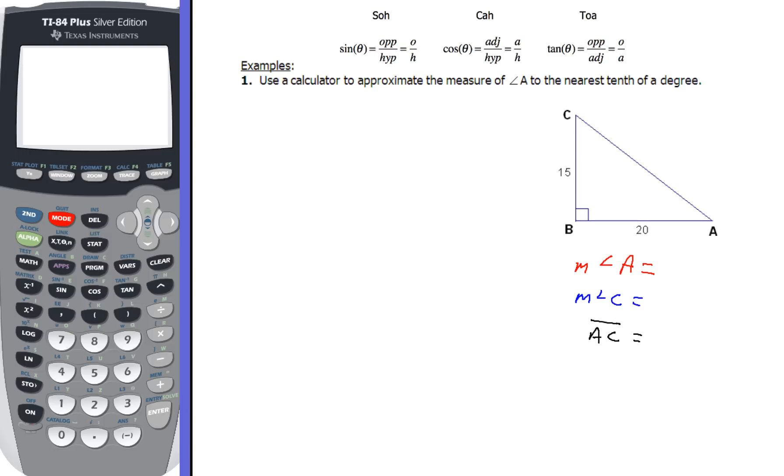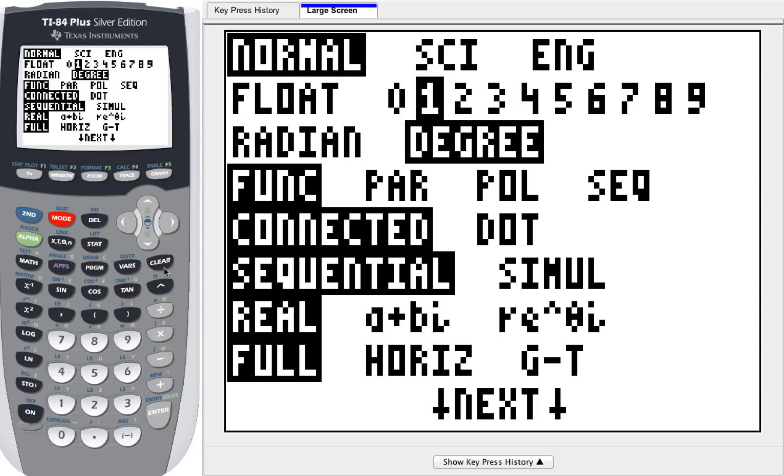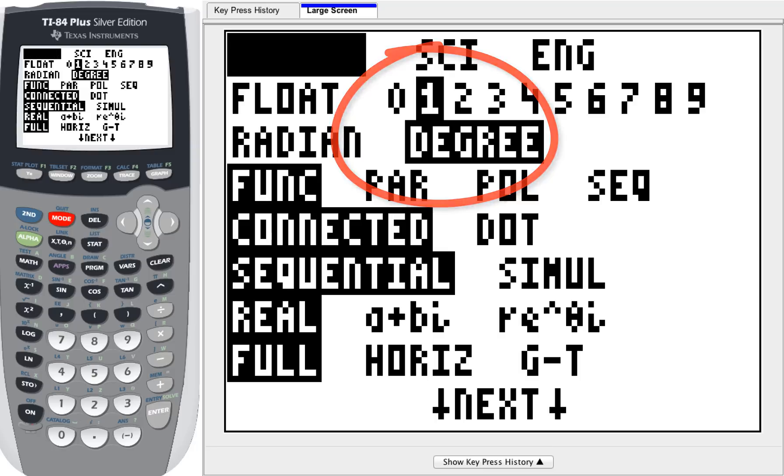Now to work with our calculator, we want to make sure our calculator is set up in the right mode, and all of these problems in this section, they're all going to be going to the tenths place. So what I want you to do is hit your mode button, and make sure that your screen and my screen match. You want the calculator set to degree, and then into the tenths place. So that's what that's going to look like in your graphing calculator.